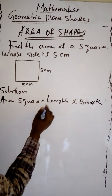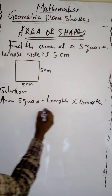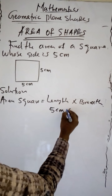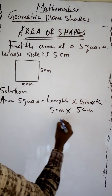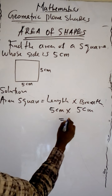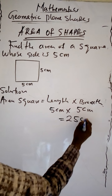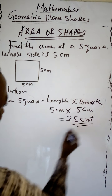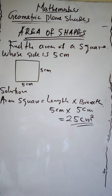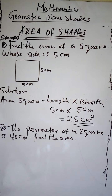And it is 5 cm times 5 cm, which is equal to 5 times 5, giving us 25 cm squared. So this is how to calculate the area of a square.